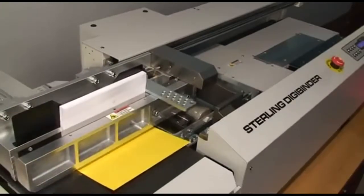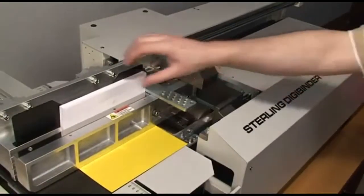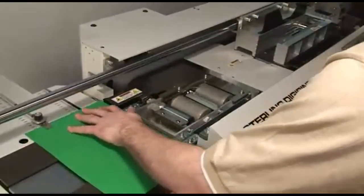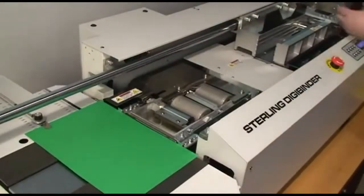It roughs and notches, applies the glue, meters the glue, and nips the book at the desired thickness. Here we are binding about 4 books per minute, or 240 books per hour.